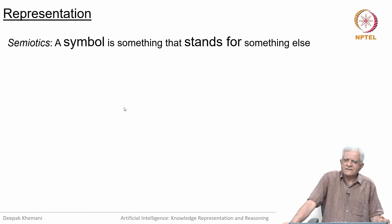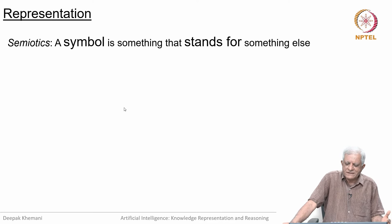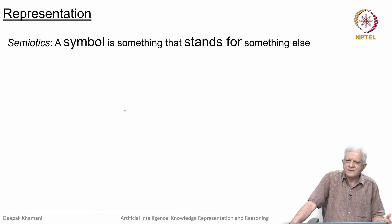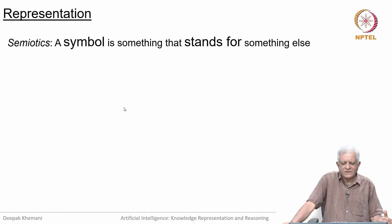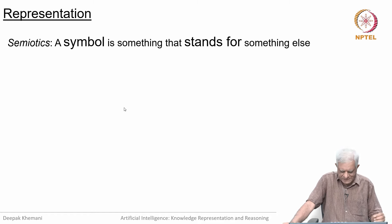We want to work with a system in which you use symbols to represent something. A symbol is something that stands for something else. By itself it may not have meaning, but it is how we interpret it that gives meaning to that symbol. There is a whole science behind this called semiotics, or the science of symbols.